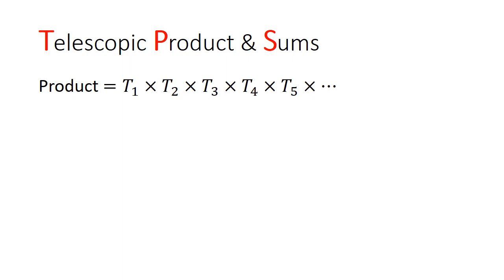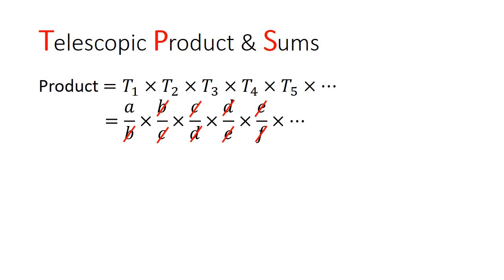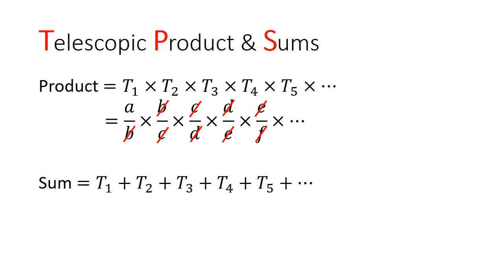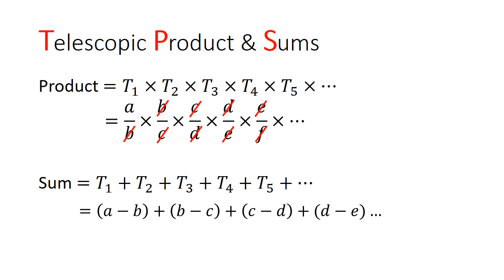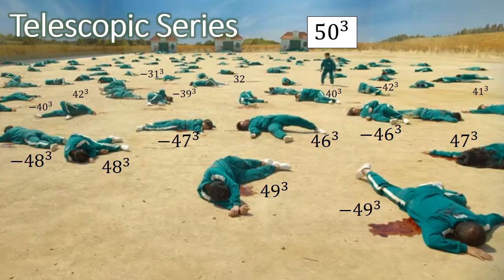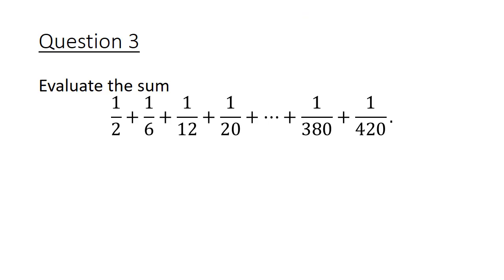To recap: in a telescopic product, we express each term so that the numerators and denominators of adjacent terms cancel each other out nicely. Similarly, for a telescopic sum, we express each term as the sum or difference of 2 to 3 other terms, such that each term cancels the adjacent ones. Basically, doing a telescopic series is like playing a round of Squid Game — the aim is to get the terms to kill off each other until only a few remain at the start and at the end.